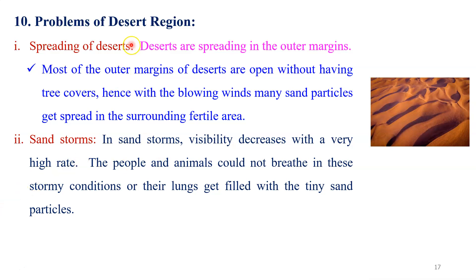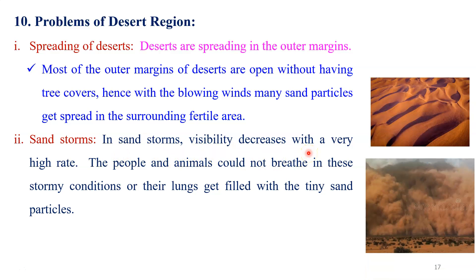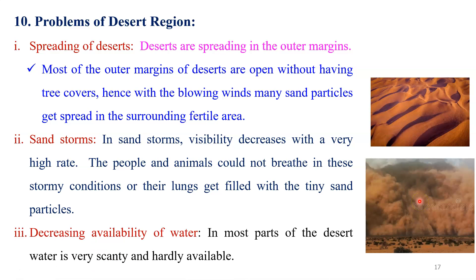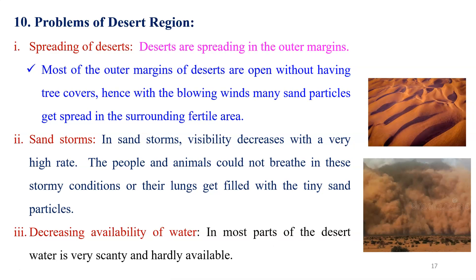The second problem is sand storms, which we observe in the desert region. In a sand storm, visibility decreases at a very high rate. The people and animals could not breathe properly in this area. Therefore, this type of sand storm is a very common phenomenon that we observe in most parts of the world. The last important problem is the decreasing availability of water. In most parts of the desert, water is scanty and hardly available. The amount of available water is decreasing day by day due to overuse and increasing consumption in that area.